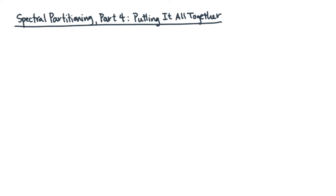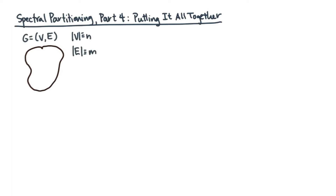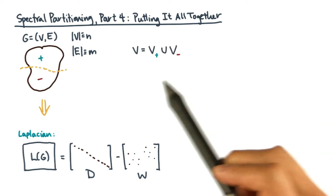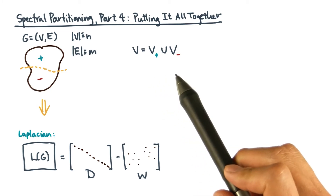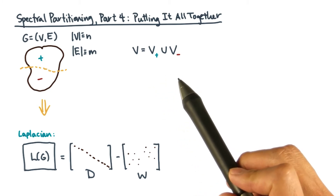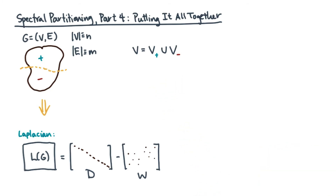Let's take stock of where you are. You start with a graph G. From G, you can construct its Laplacian, L of G. Now suppose you have a partition of G. That implies a partitioning of the vertices into two sets, call them V plus or V minus. In linear algebraic terms, you can translate this vertex partition into a partition vector.